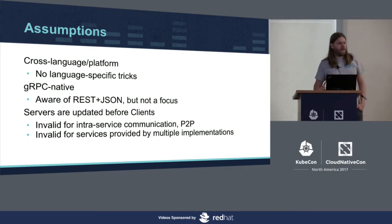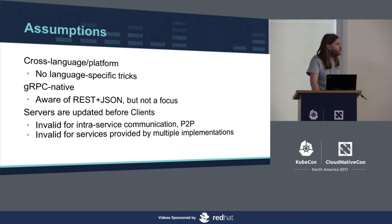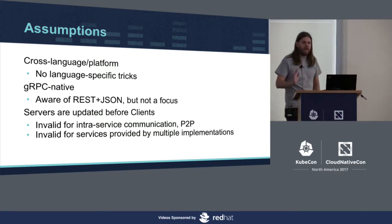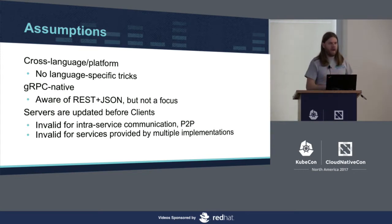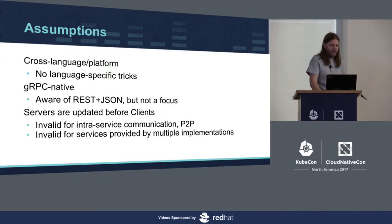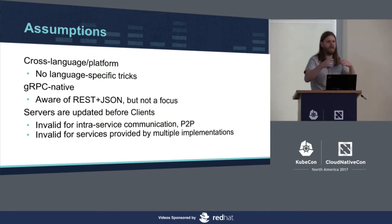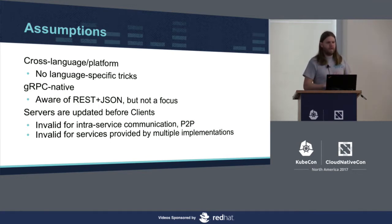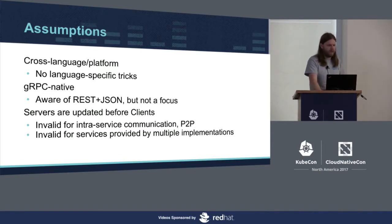I'm going to assume that we're caring about cross-platform, cross-language, and we can't do tricks that only work for some clients. Also, I'm assuming this is gRPC native — I know that REST with gRPC is definitely a thing, but it's not as much of a focus here. And I'm assuming that servers are updated before clients. This might seem obvious, but if you have a back-end scenario where gRPC communicates between two servers, you can update one before the other — it's not as much for those cases.